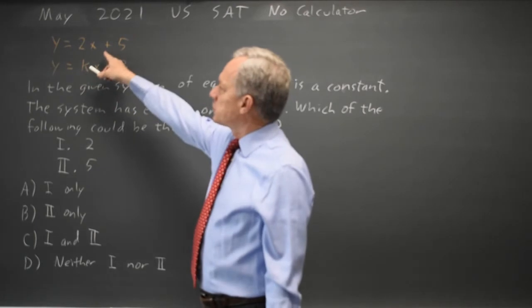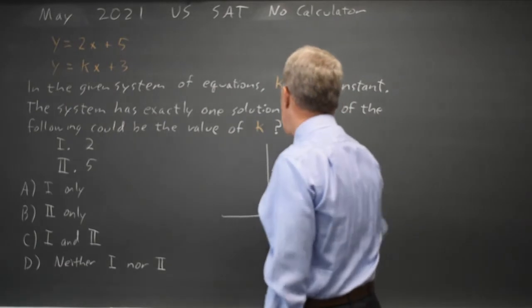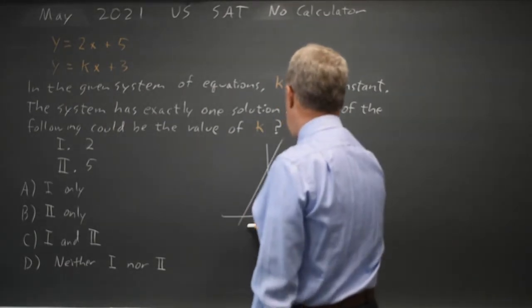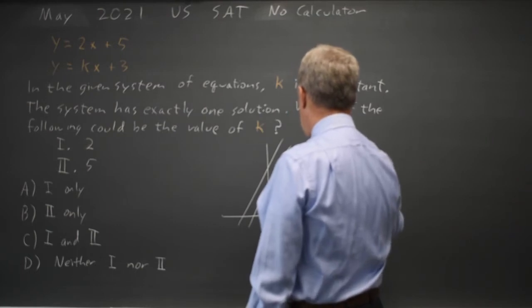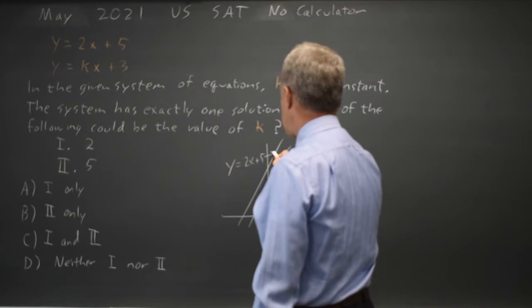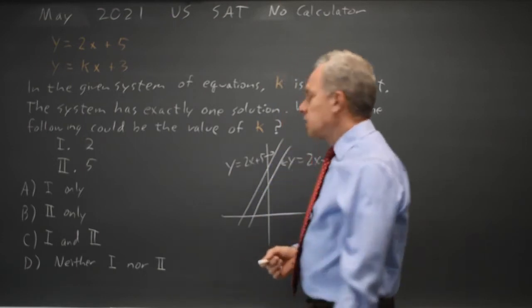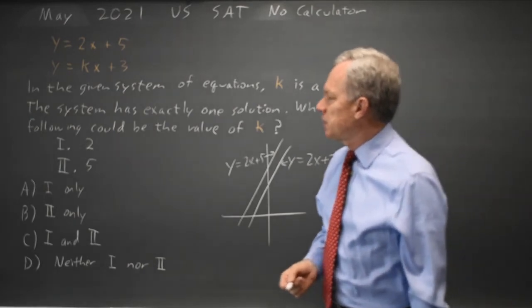If you have y equals 2x plus 5 and y equals 2x plus 3, those are parallel lines. They never intersect. There are zero solutions, so k cannot be 2.